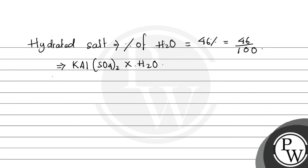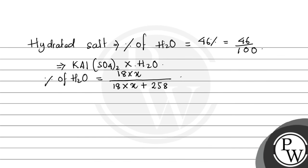The percentage of H₂O is given by (18X) / (18X + 258) × 100, where 18 is the molecular mass of water and X is the moles of water, and the total mass of the anhydrous compound is 258. Setting this equal to 46%, and solving, we get X = 12.